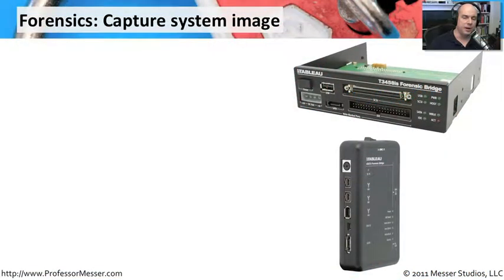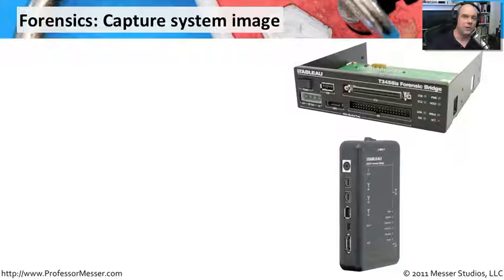If we're collecting data from a hard drive or from digital storage media, we may want to grab an image of that drive. We would like an exact representation of that drive that we could copy off somewhere else. And if we ever needed to reference what was on that drive, we have an exact duplicate in time, frozen, that we would be able to see what's going on.